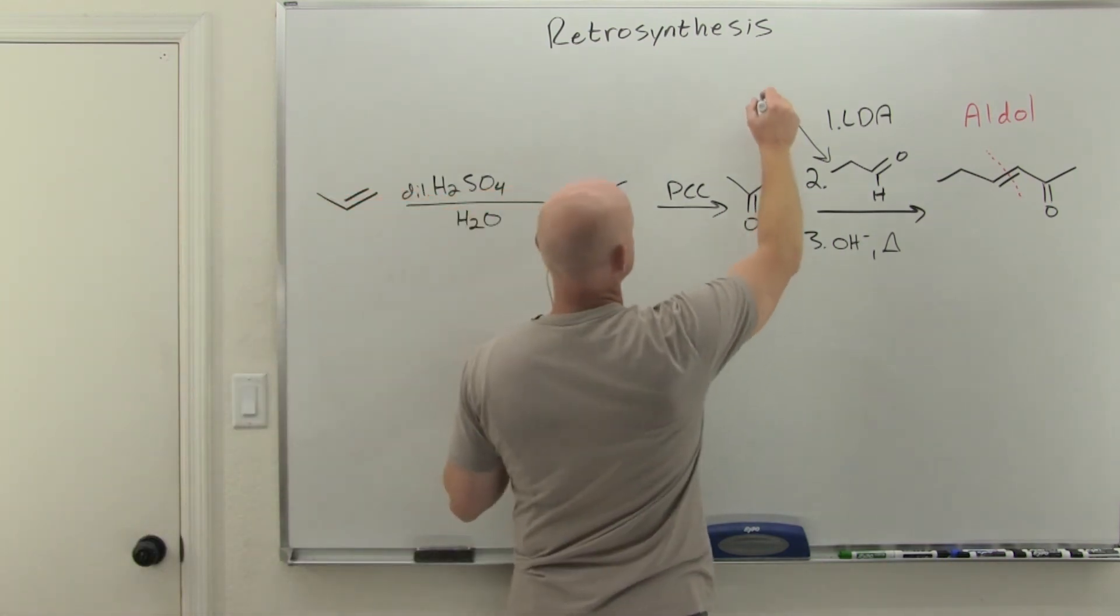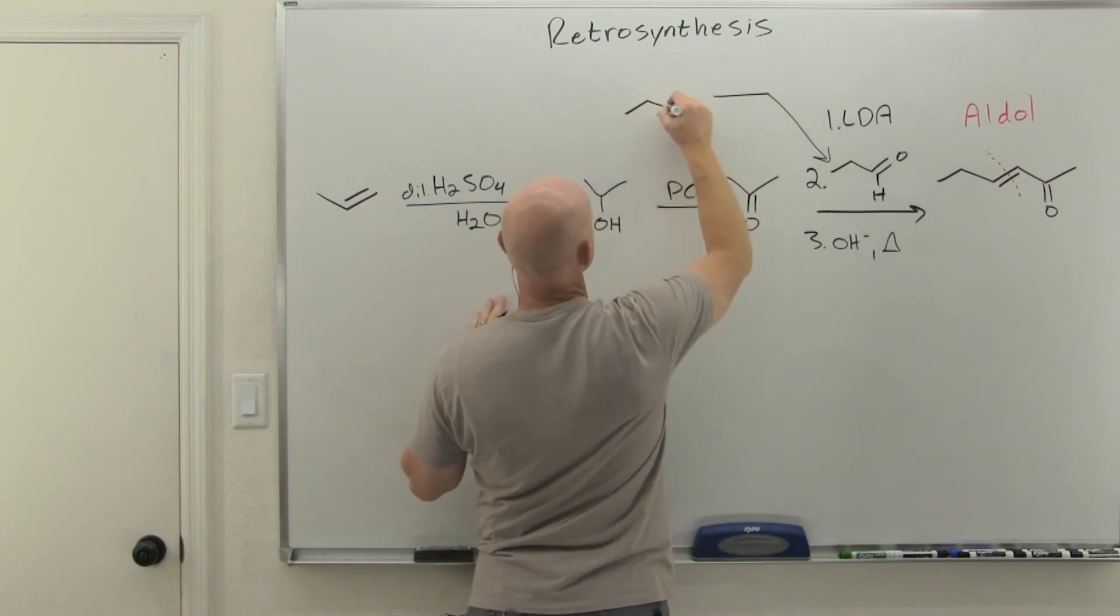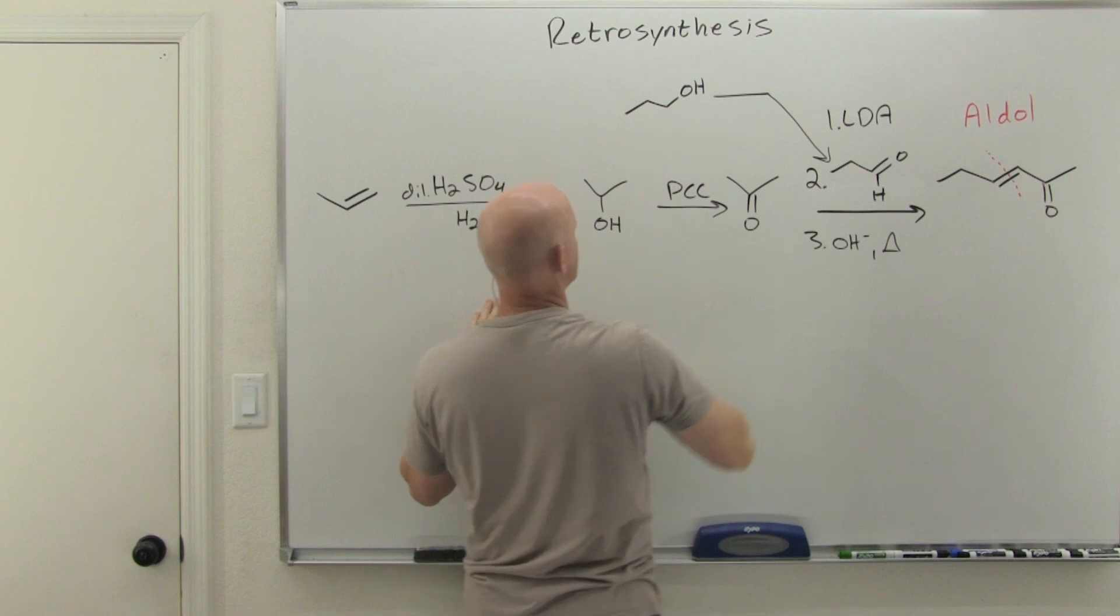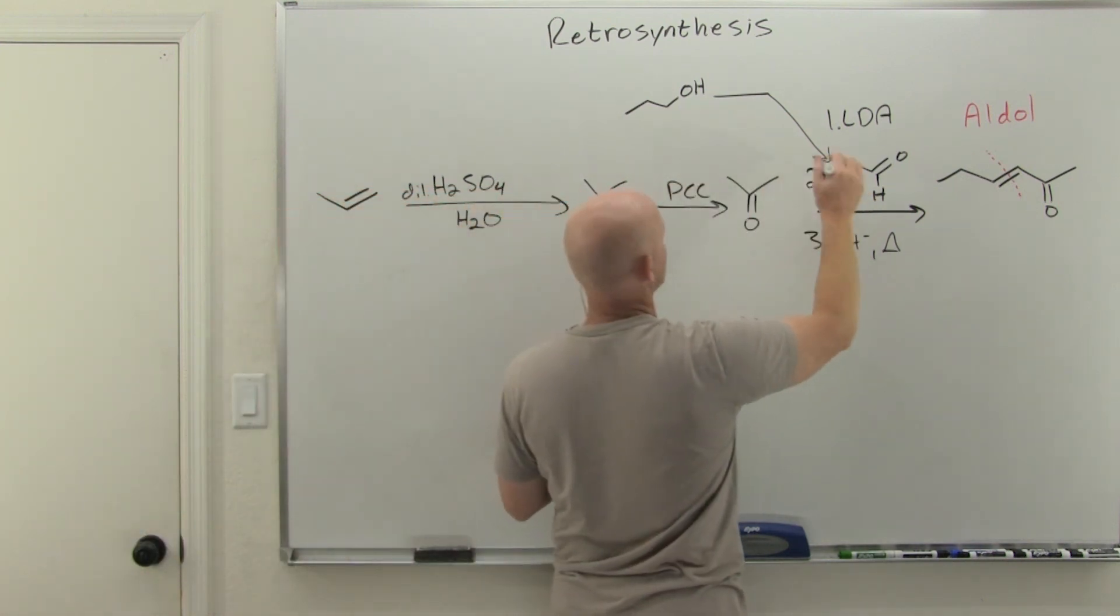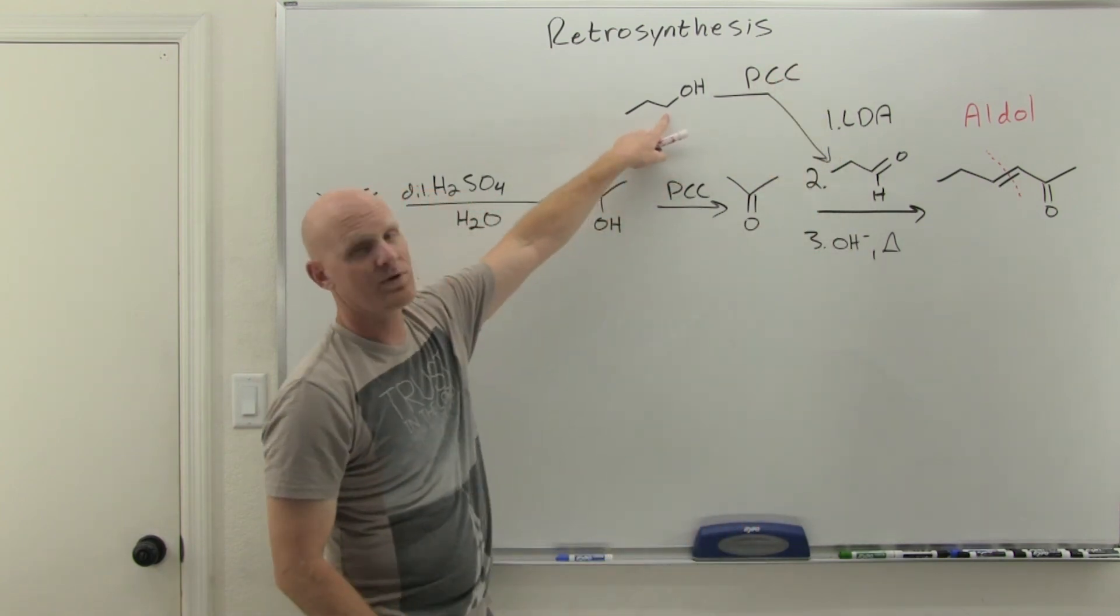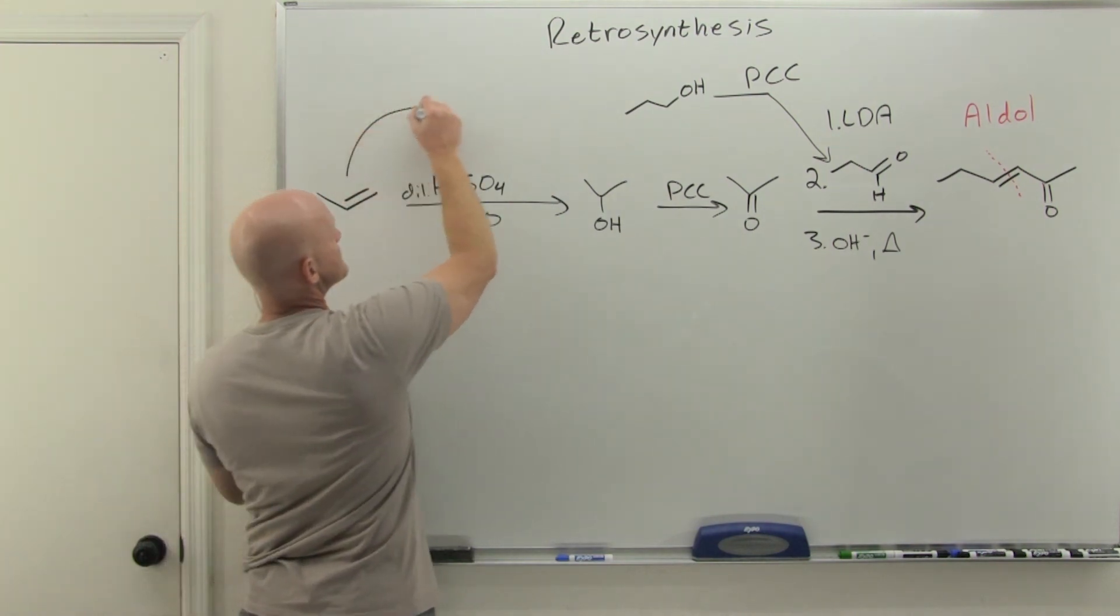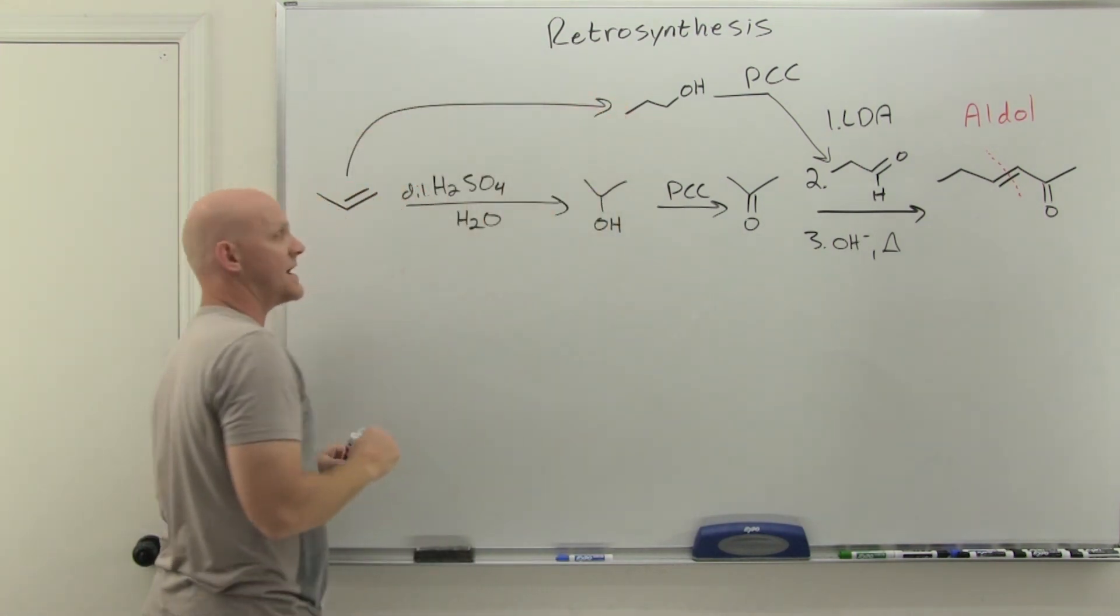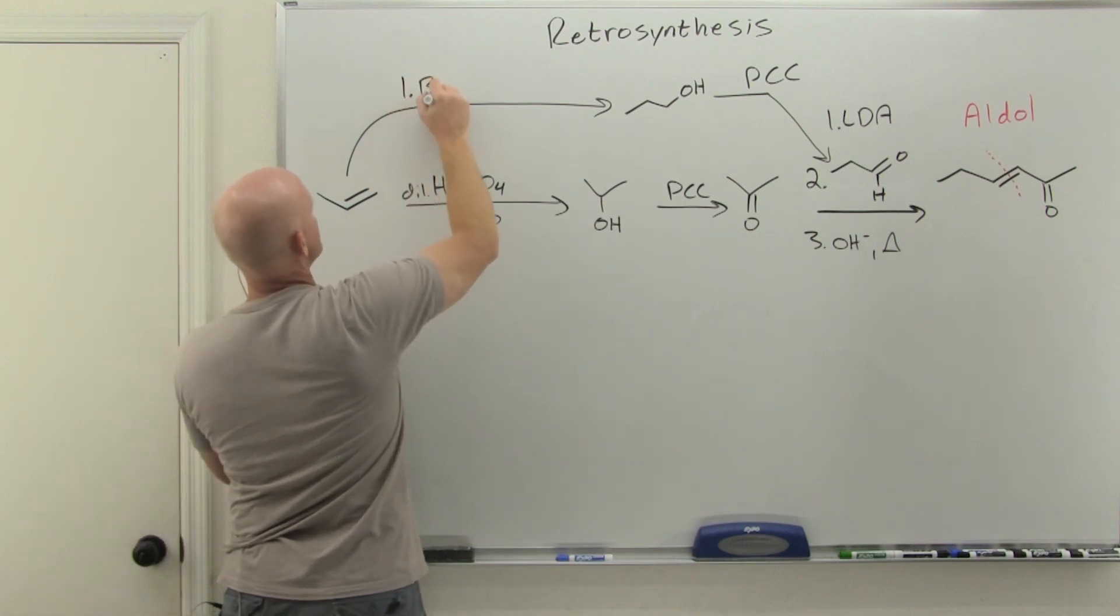To make the aldehyde, we could take the same approach from a three-carbon source, made from a primary alcohol. To oxidize the primary alcohol to the aldehyde, you have to use PCC; you can't use chromic acid. Chromic acid would oxidize the primary alcohol all the way to the carboxylic acid. This is just the addition of water across the alkene, but anti-Markovnikov, so you have to do hydroboration-oxidation.